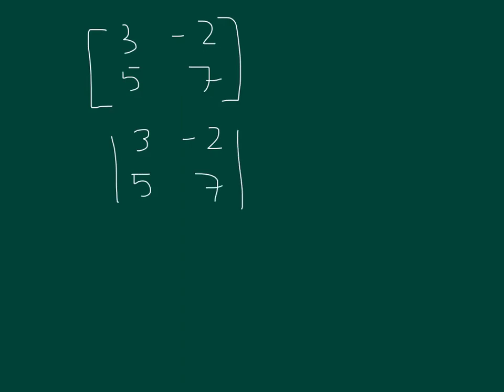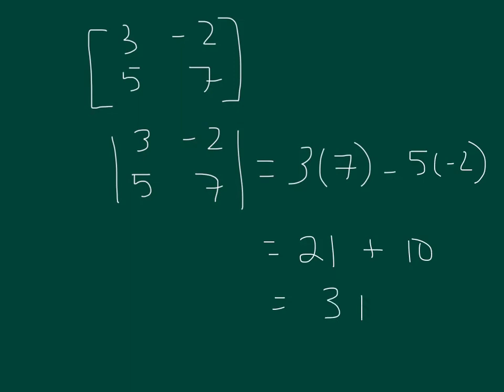This equals these two numbers multiplied together. So 3 times 7, and then we subtract the other diagonal numbers multiplied together. 5 times negative 2 yields 21 plus 10. So the determinant of this 2 by 2 matrix is 31.